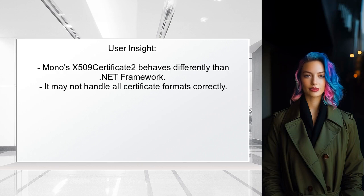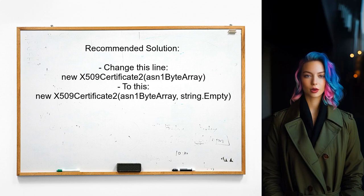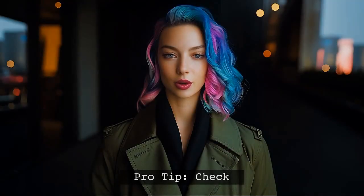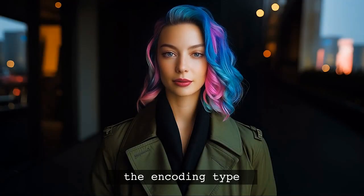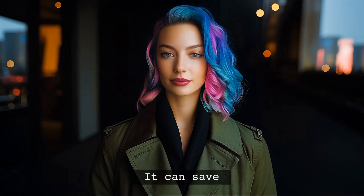Mono's implementation is less flexible and may not properly decode certain formats. If you're using a PFX with an empty password, changing your code to include an empty string as the password when creating the X509Certificate2 instance could resolve the problem. Pro tip: always check the encoding type when working with certificates — this can save you a lot of headaches down the line.